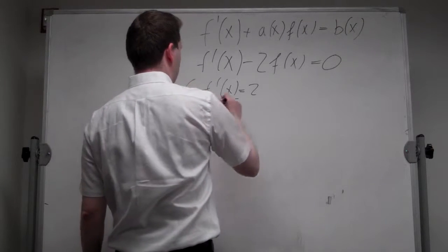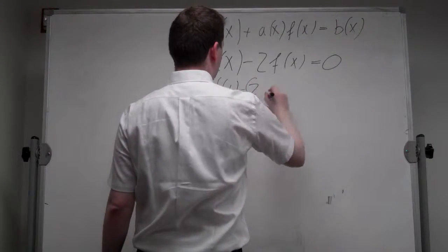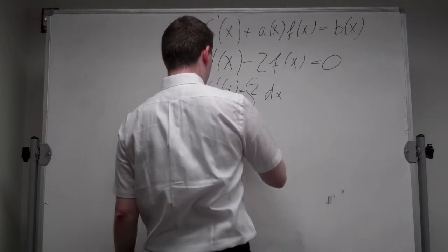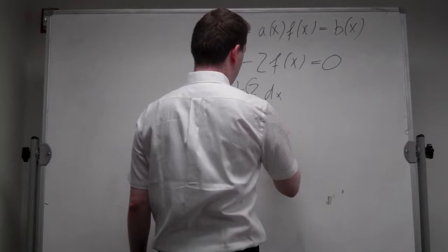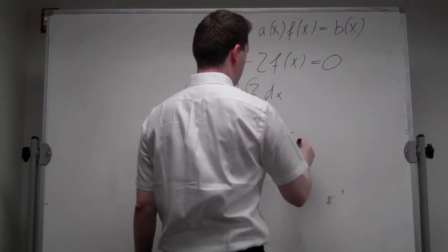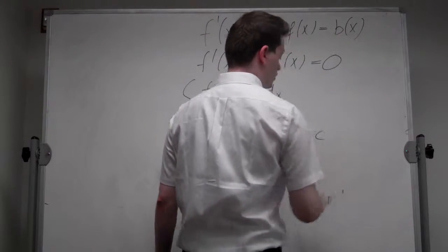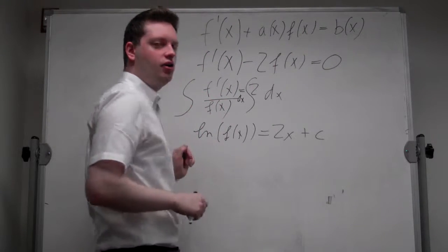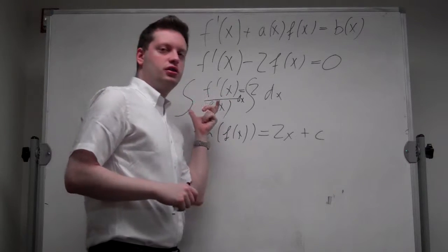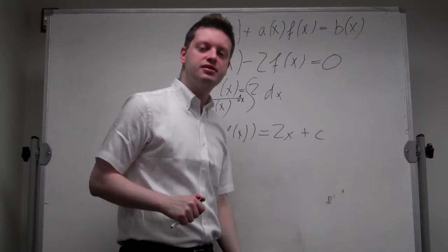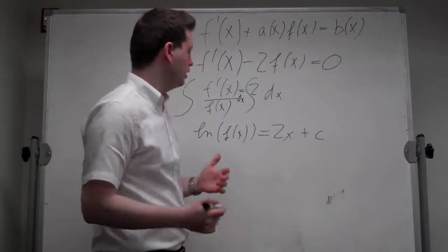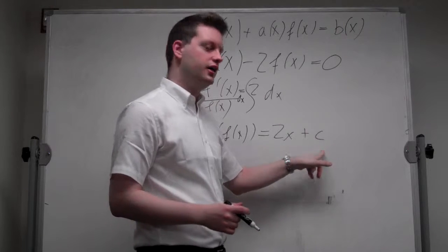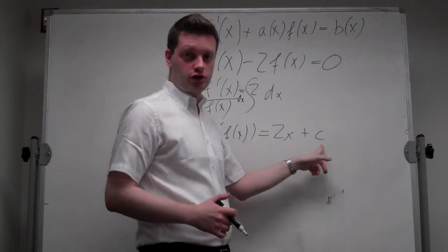We integrate both sides. On the left-hand side we get log of f of x, which equals 2x plus some constant. Because integrating without bounds gives a constant on each side, for simplicity we take the constant from the left, move it to the right, add it to the constant there, and we get one general constant.